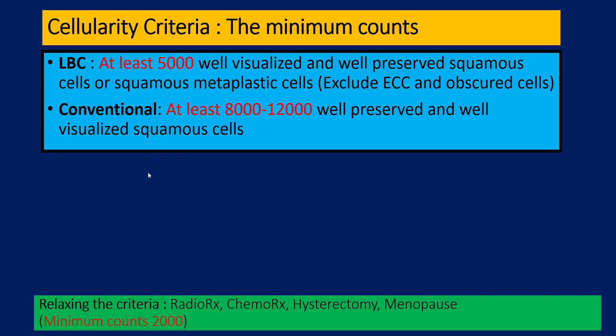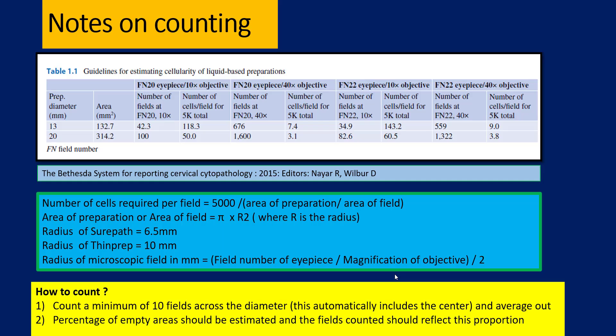There are certain situations where you might like to relax the criteria. For example, if the patient has had prior radiotherapy, chemotherapy, hysterectomy, or is menopausal, you may bring down the threshold to a minimum count of 2,000 — but not lower than that. These are the specific situations where you can do so.